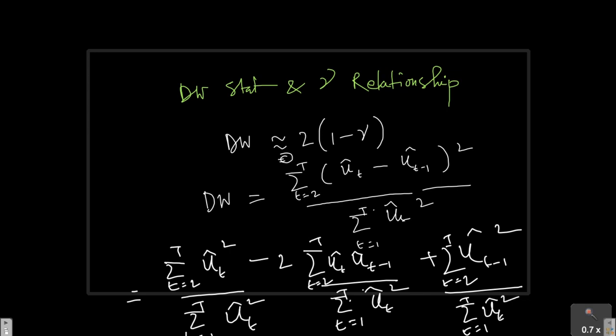So, now, something to look at here. In numerator and denominator, the terms are pretty close for, let's say, this term. Only thing that is different is t is equal to 1 to t and in the numerator, t is equal to 2 to t.